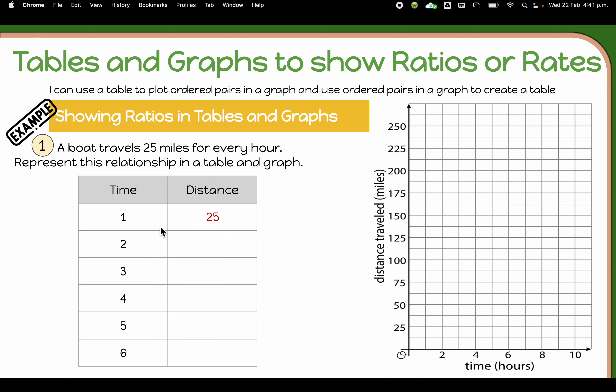So we have this relationship showing us in the table. Here we have the time and the distance. Here we have the time is equal to one. So how far would we travel in one hour? 25 miles.